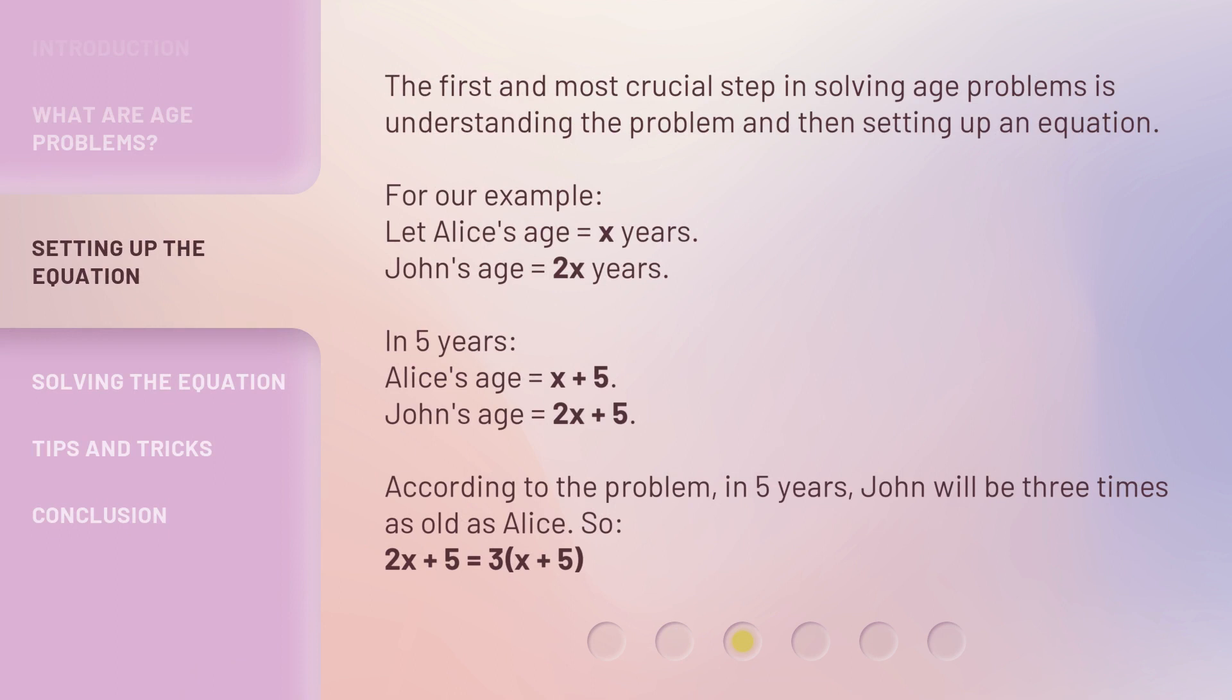The first and most crucial step in solving age problems is understanding the problem and then setting up an equation. For our example, let Alice's age = x years. John's age = 2x years.